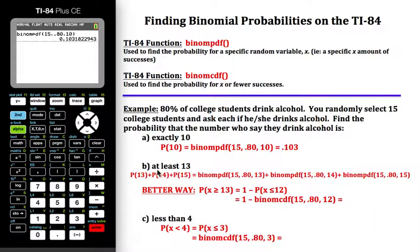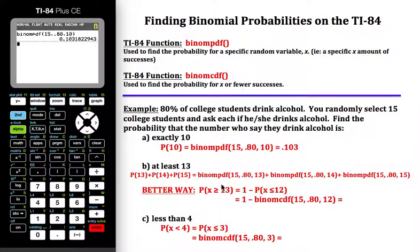A better way to do this is to use the complement. If we want the probability that at least 13 drink alcohol — P(X ≥ 13) — using the complement that becomes 1 minus P(X ≤ 12). My choices are 13, 14, or 15, so the complement is 0 through 12. So I would enter 1 minus the binomCDF function, because this fits X or fewer successes.